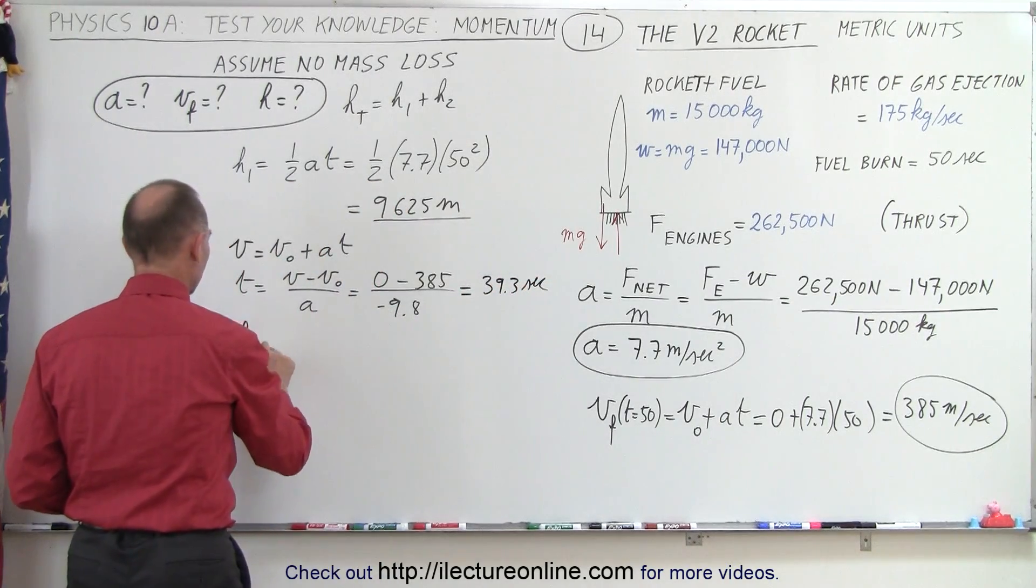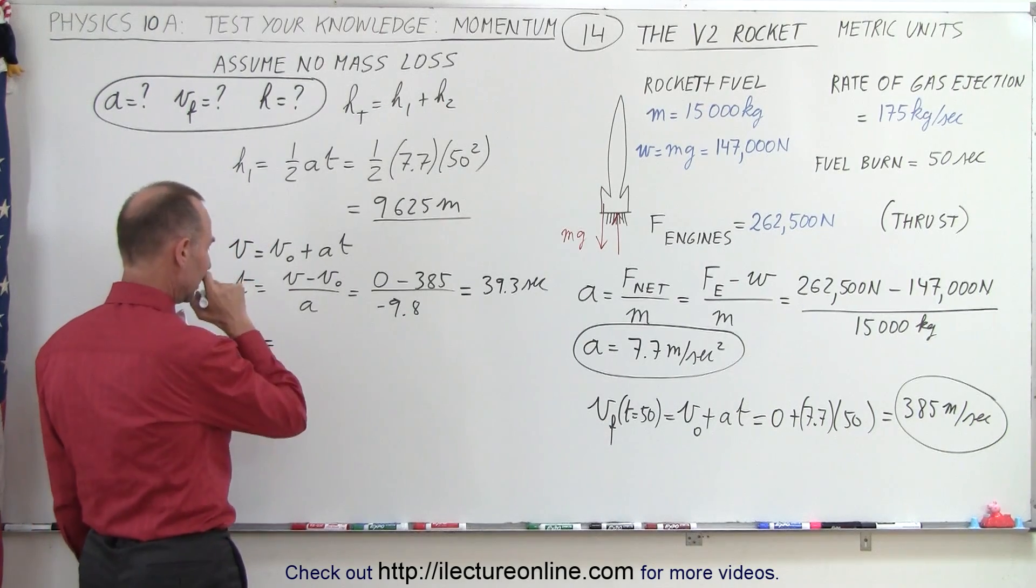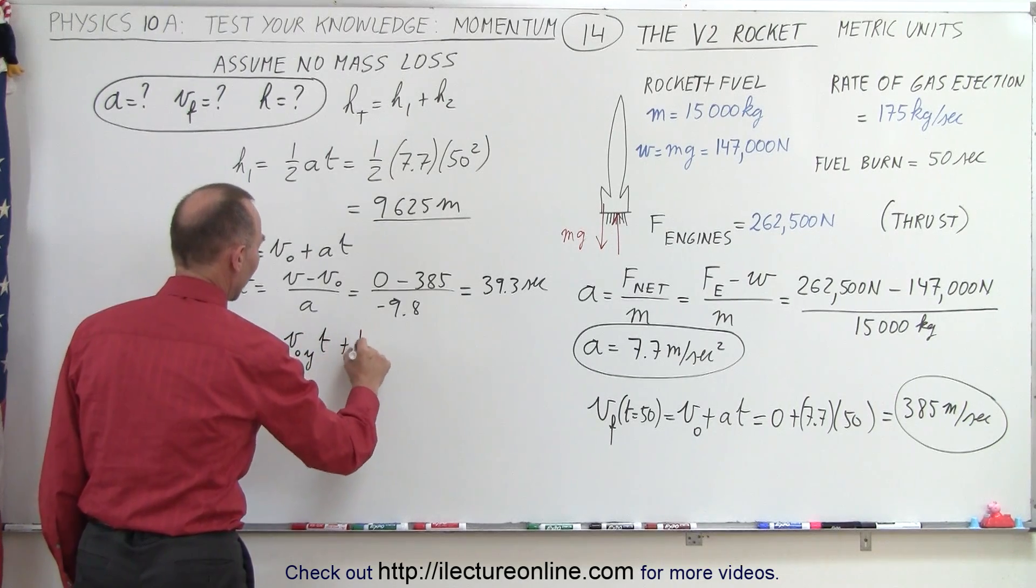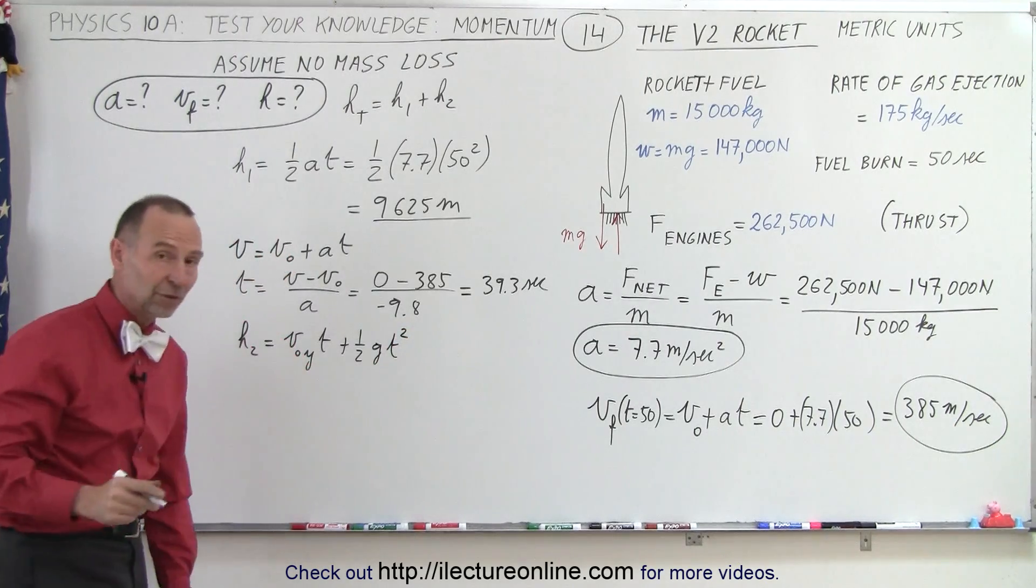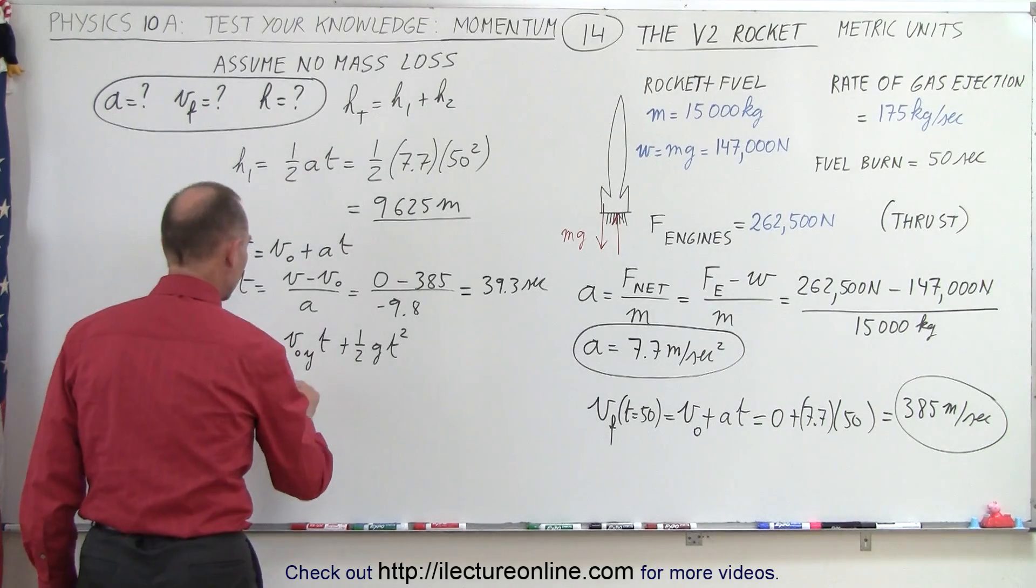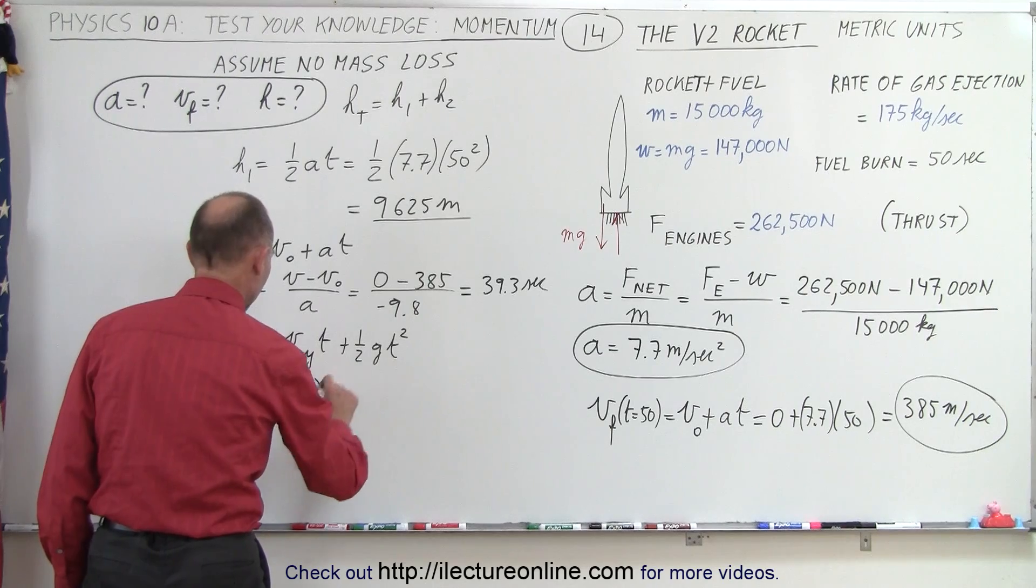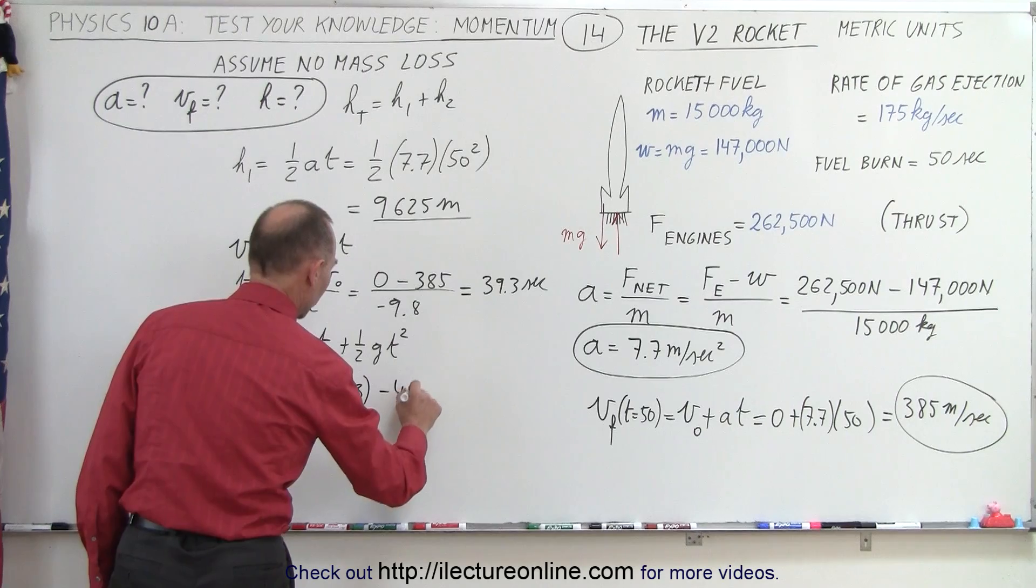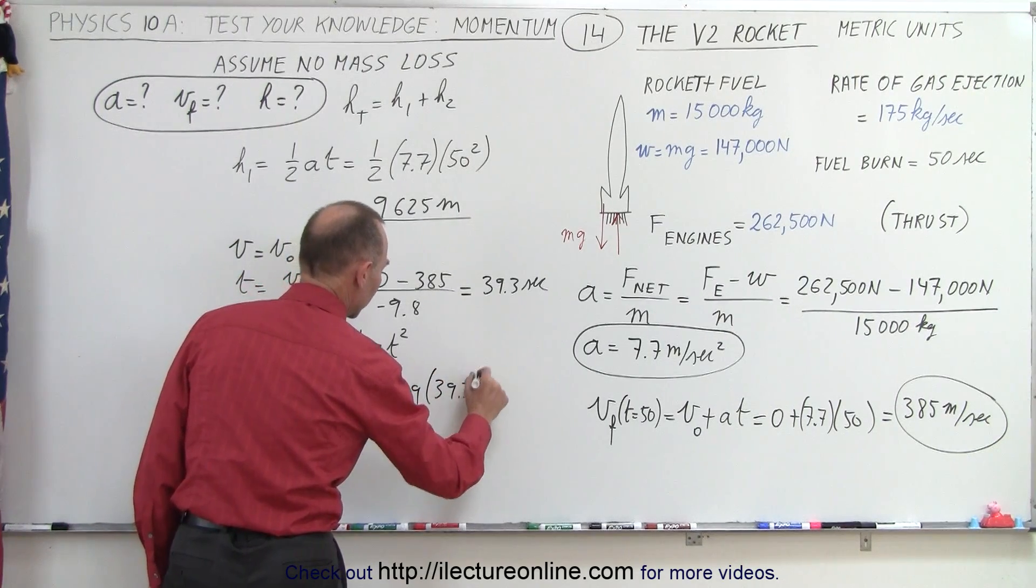So now for H2, H2 is equal to, let's see here, that'll be V initial in the y direction times time plus 1 half G T squared because now it's subject to the acceleration due to gravity by itself. And so that means the initial velocity in the y direction, that's 385 meters per second times a time of 39.3 seconds minus 4.9, that's half G, times 39.3 quantity squared.